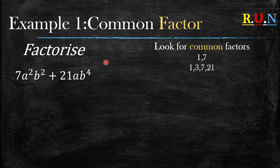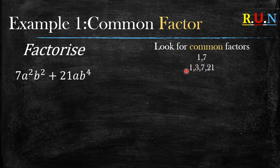The factors of 7 are 1 and 7. The factors of 21 are 1, 3, 7, and 21. If you don't know how to find the factors of a number, I'll put a link below in the description. Between these two lists of numbers, which one is the highest common factor — meaning which one is common in both but the highest? In this case it's 7.